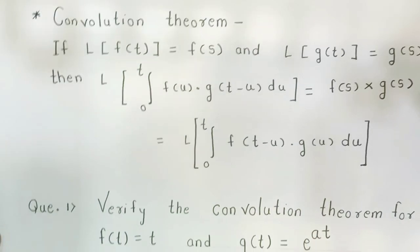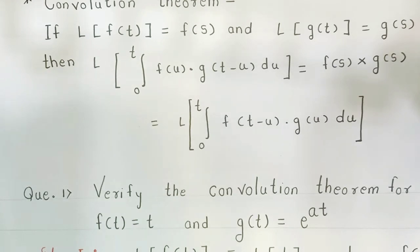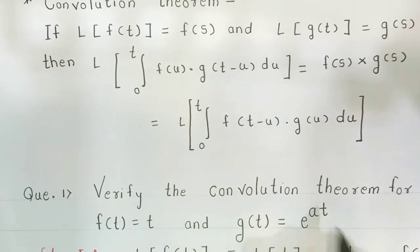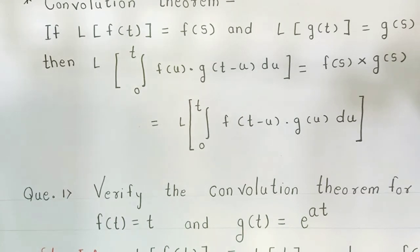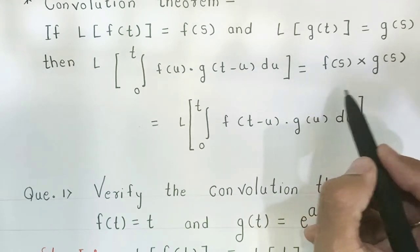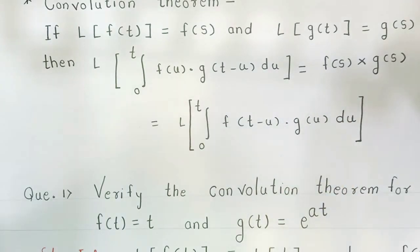Now let us consider one example for this theorem so you will clearly understand what the Convolution Theorem is. Verify the Convolution Theorem for f(t) = t and g(t) = e^(at). According to this theorem, first find out the Laplace of the given f(t) and g(t), and after that write down the product F(s)·G(s).